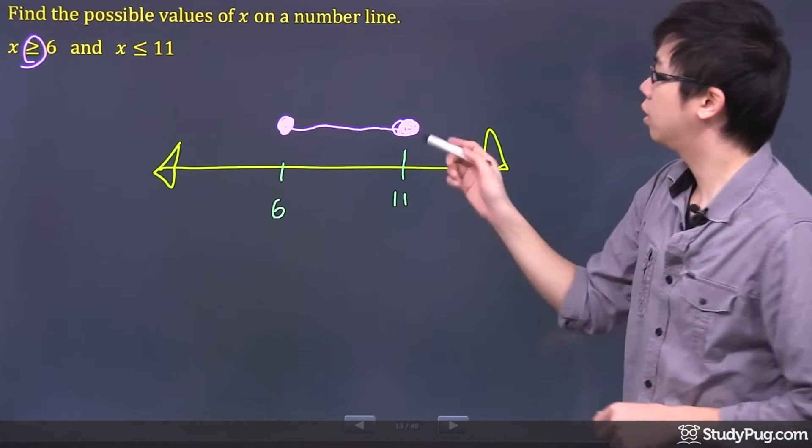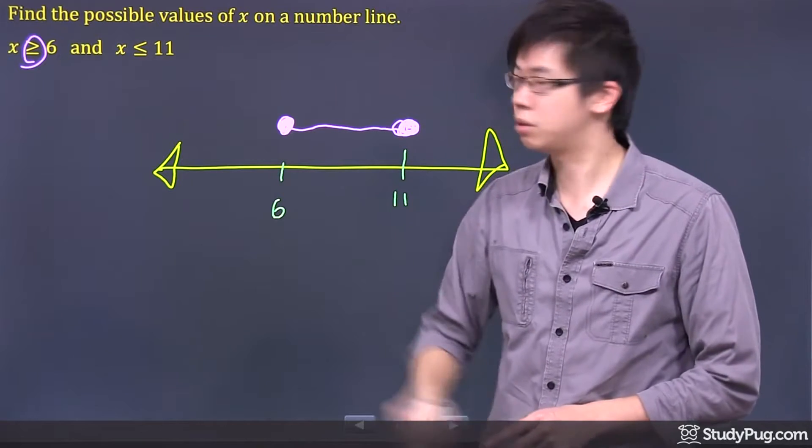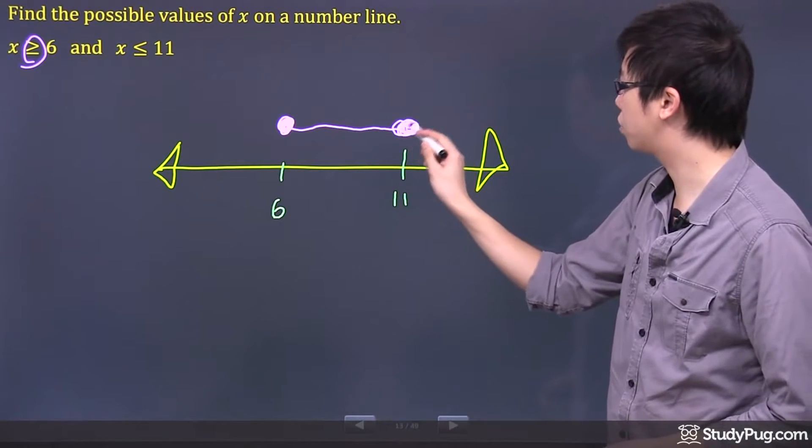but at the same time, it's also less than or equal to 11. That's why I put a closed dot right here as well.